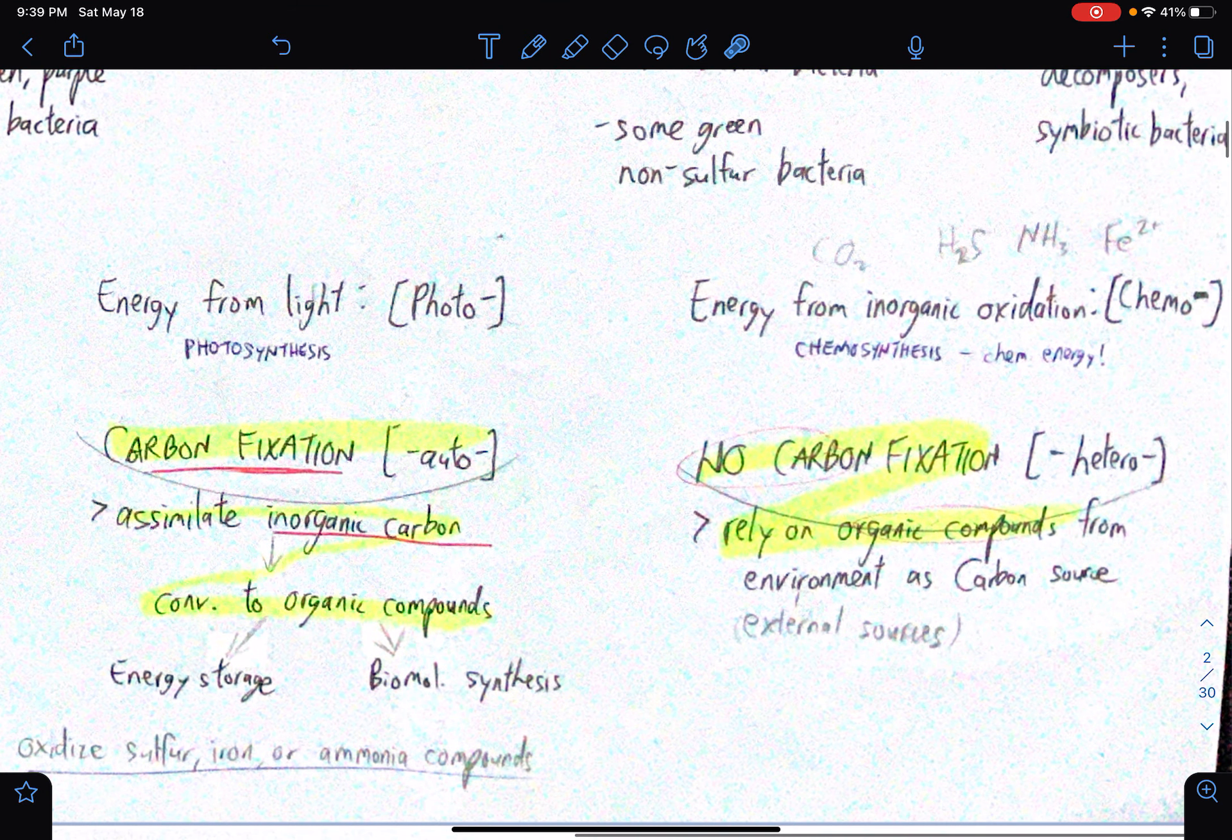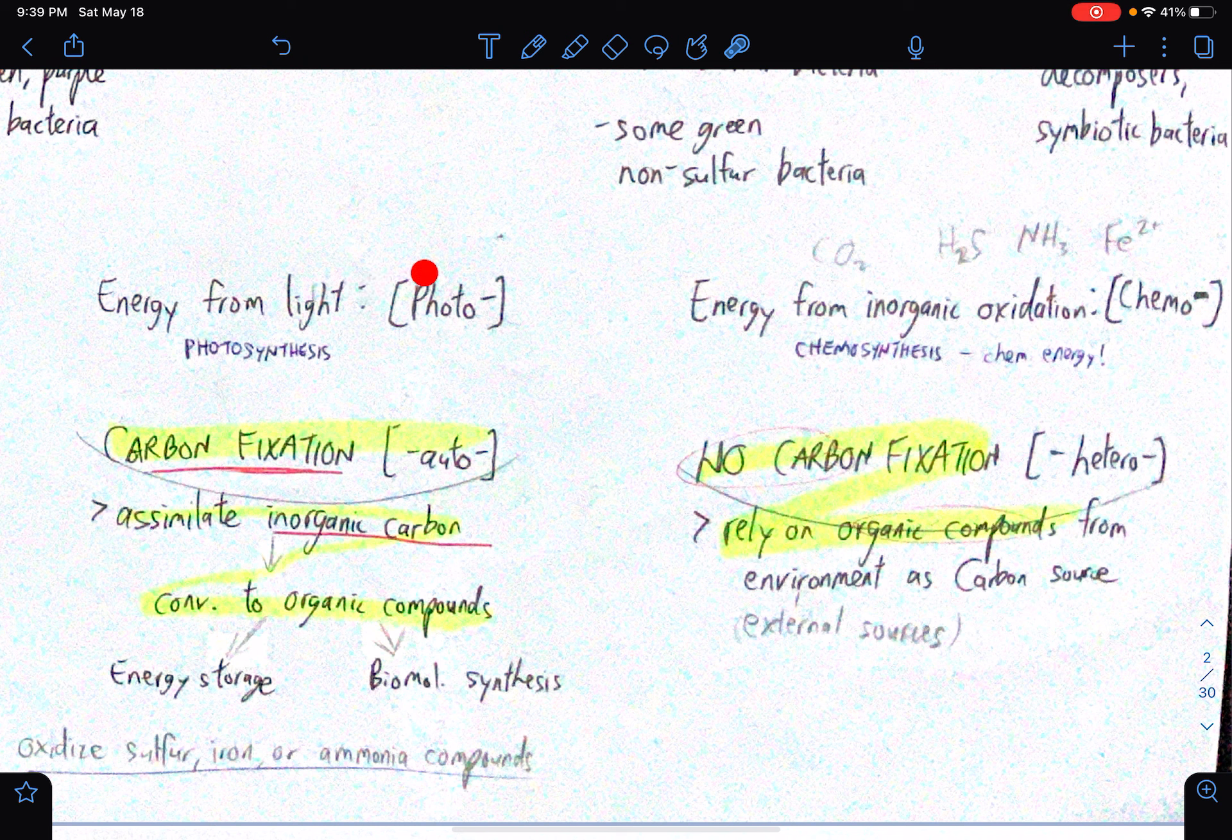Okay, so like what I said earlier, energy from light, then if that's mentioned, basically there's a prefix photo already. And if it does do carbon fixation, then there's the word auto. If it does not undergo carbon fixation, then the word is hetero instead. And what is the energy, if it's stated that it gets energy from inorganic oxidation, basically, instead of photosynthesis, they undergo chemo-synthesis, chemical energy, essentially. Then of course, from the word chem, the prefix is chemo.